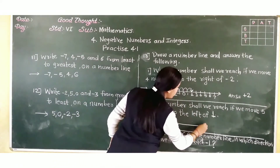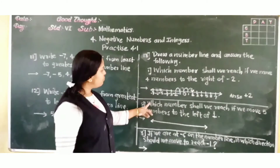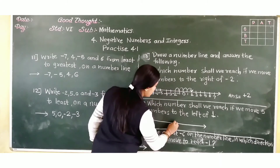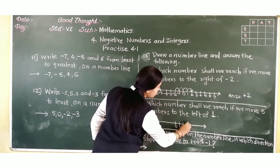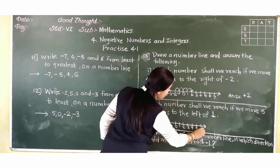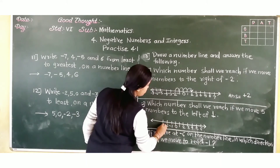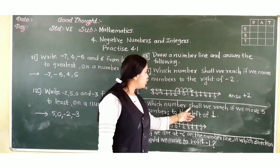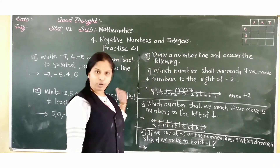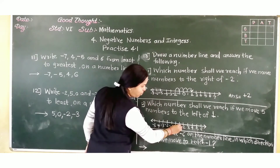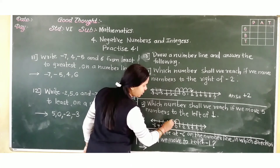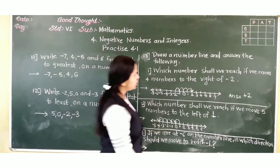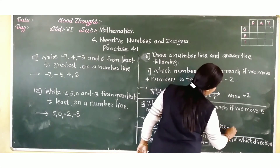Again we draw the number line. The question asks: which number shall we reach if we move 5 numbers to the left of 1? Here: 0, then 1, 2, 3, 4, 5, 6 on the right, and minus 1, minus 2, minus 3, minus 4, minus 5 on the left. From 1, moving 5 numbers to the left: 1, 2, 3, 4, 5. So we reach minus 4. The answer is minus 4.